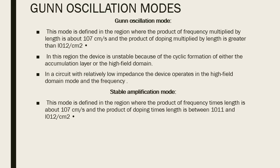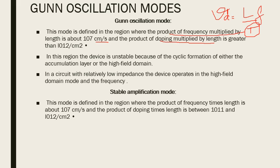Now let us see the oscillation modes. The current oscillation modes depend upon two key parameters: the product of frequency multiplied by length, and the doping concentration multiplied by length. The unit of frequency times length is 10 raised to 7 centimeters per second — this makes sense because frequency times length gives a velocity, since v = L/T and 1/T is frequency. The doping concentration multiplied by length should be greater than 10 raised to 12 per centimeter squared.